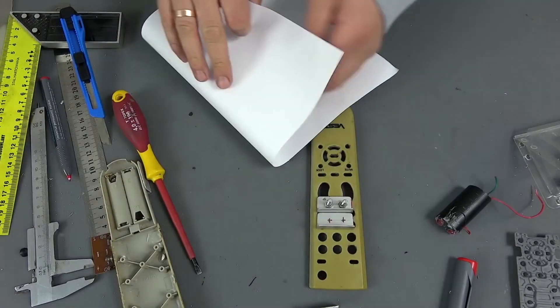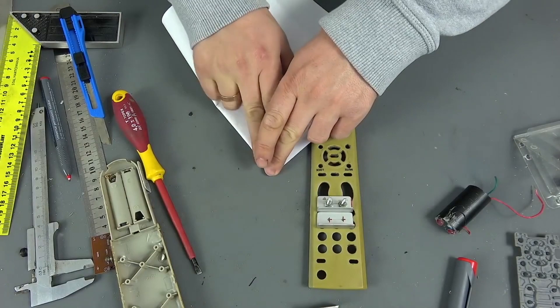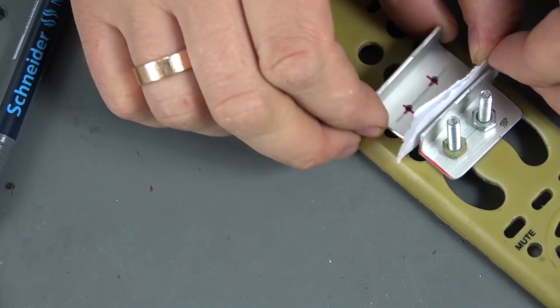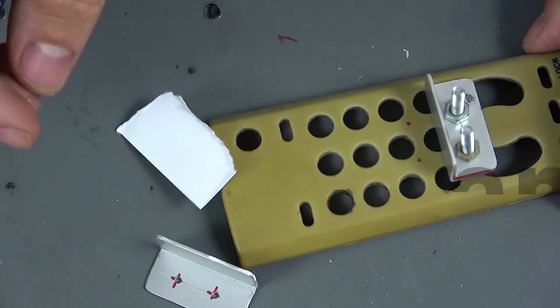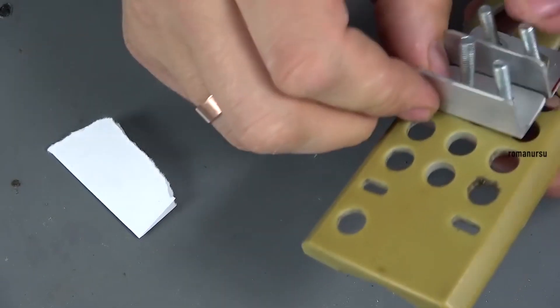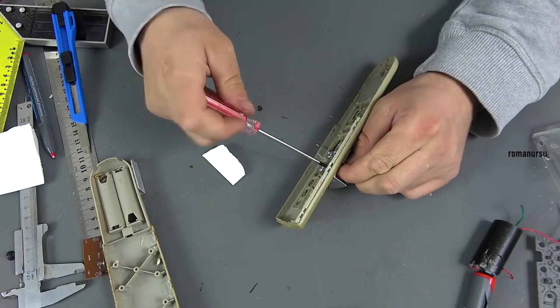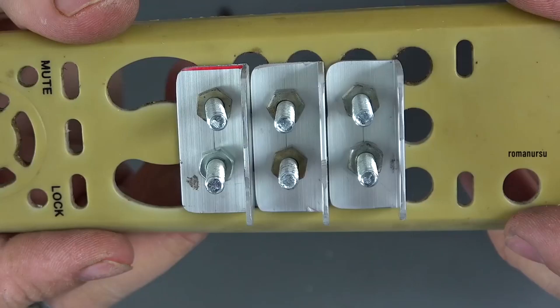We take a regular sheet of paper for the printer, fold it in half, apply the second profile as tightly as possible, and make marks, and then holes. The same operation should be performed five times, achieving a minimum gap between the profiles.